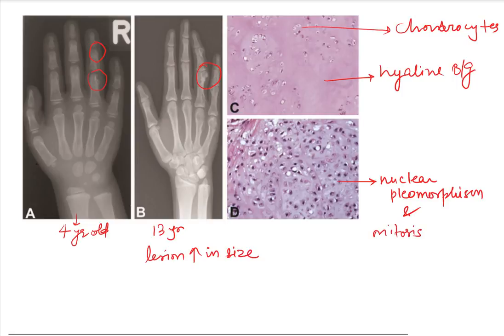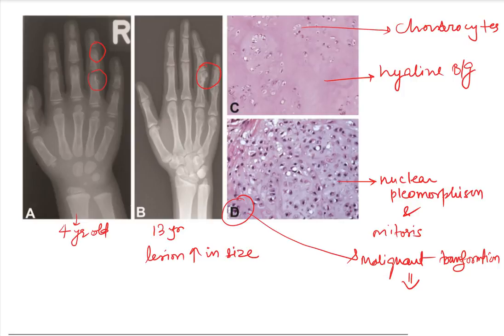This is basically showing malignant transformation — picture D is showing malignant transformation. The malignant counterpart of enchondroma is known as chondrosarcoma.